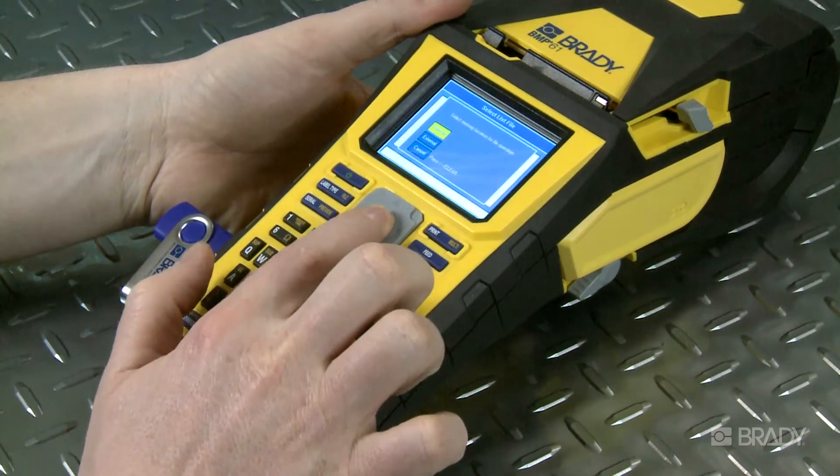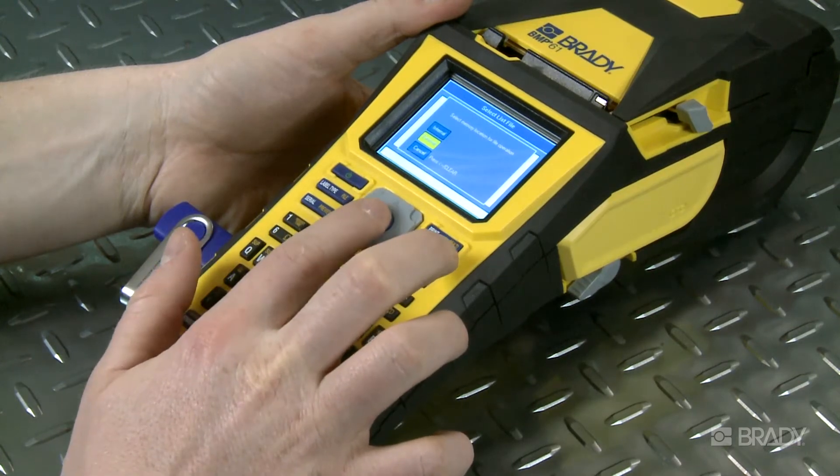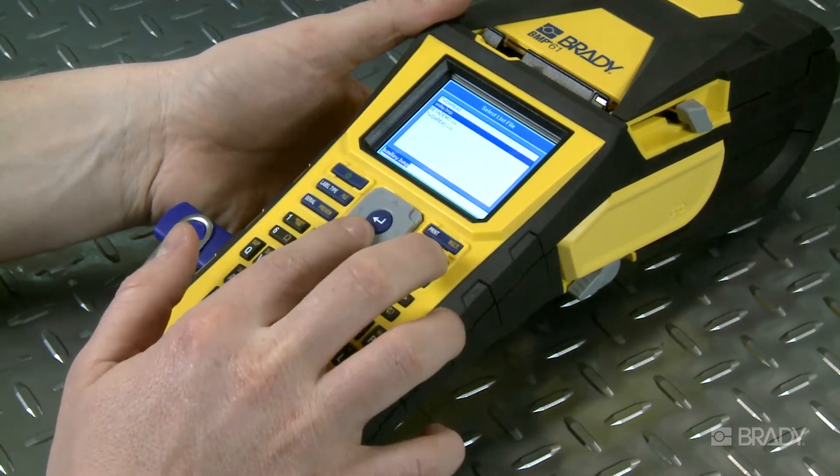Then select the Merge option. Next, select the External option since you're importing the list from an external USB drive.